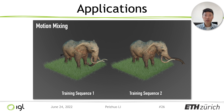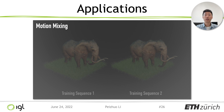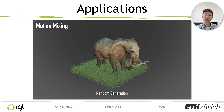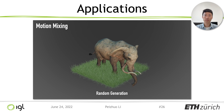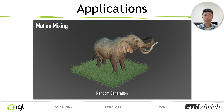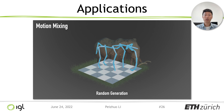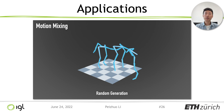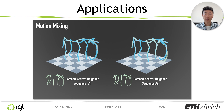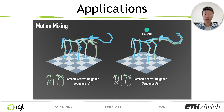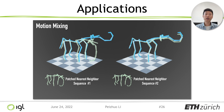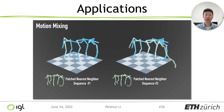We can also mix motions from two different sequences and generate a single sequence that fuses their content. Visualizing the skeletal animation of our generated result in blue and its nearest neighbor in gray, we see that different patches contain motions from both training sequences, showing that our method can naturally fuse the training motions.